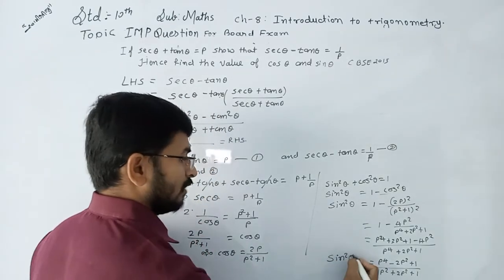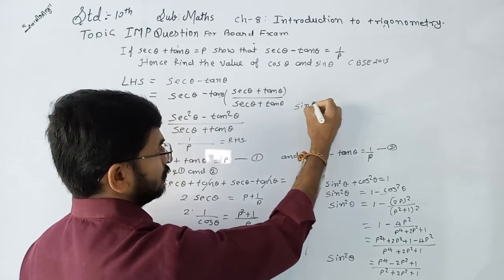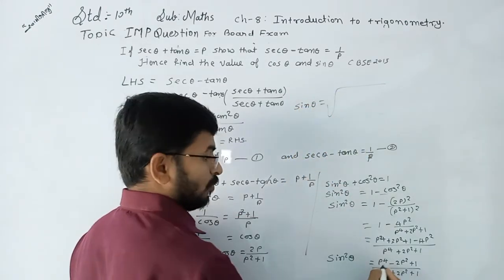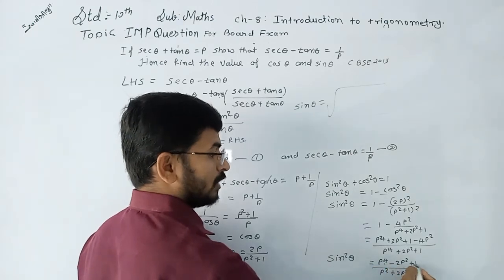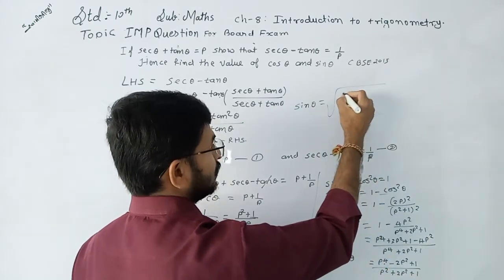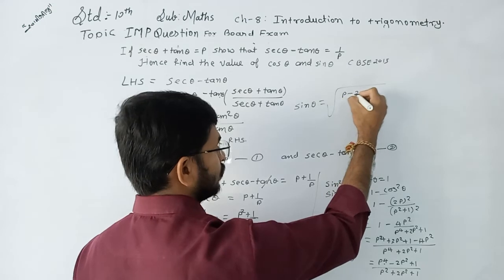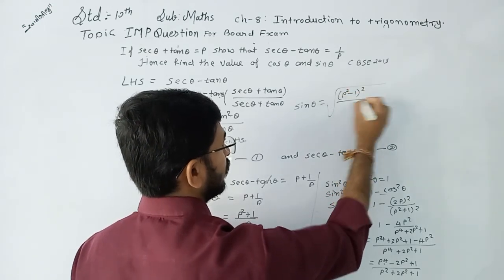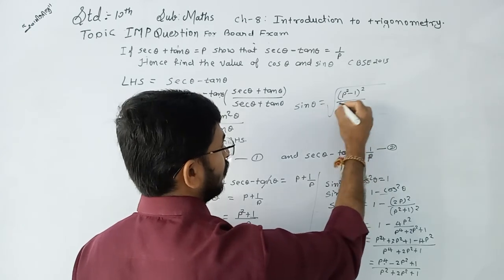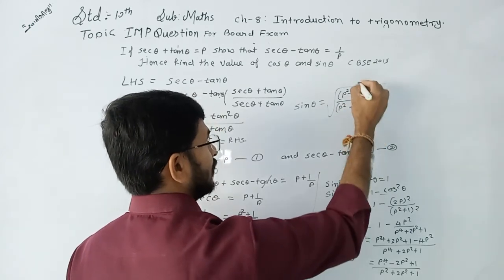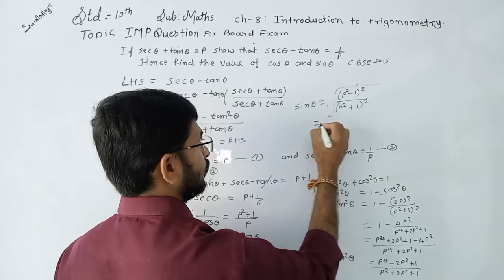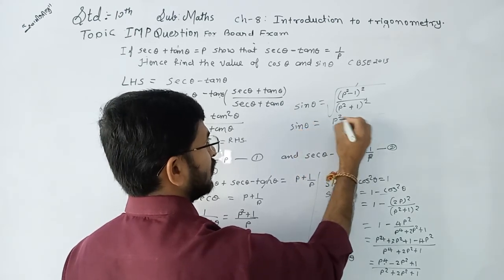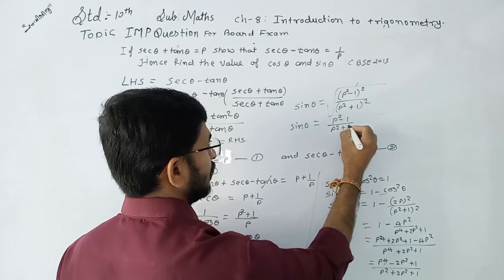Now this is the value of sin²θ. Taking the square root, sin θ = √[(p⁴ - 2p² + 1) upon (p² + 1)²]. We write the numerator as (p² - 1)², so the square root cancels, giving sin θ = (p² - 1) upon (p² + 1).